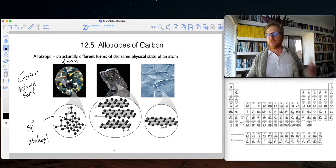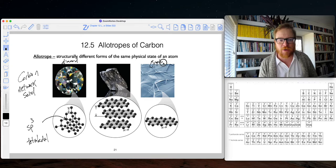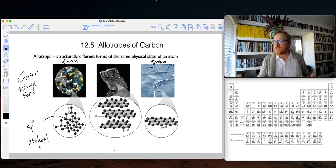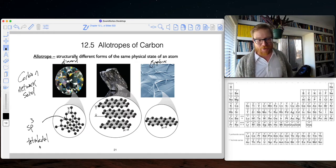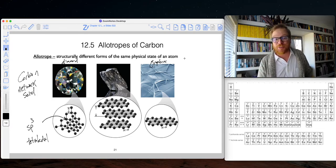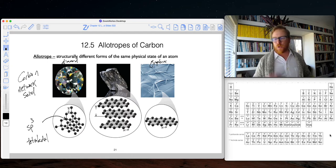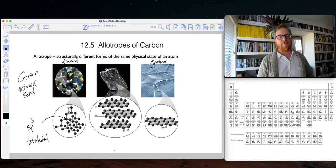And up until the discovery of graphene, which is this material over here, diamond used to be the strongest material known to man. But as it turns out, graphene is now the strongest material known to humans. So now what is this thing in the middle?